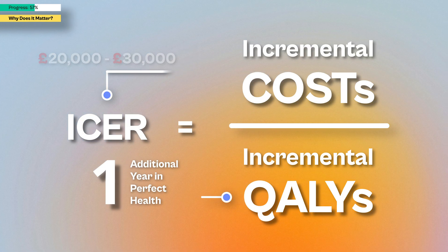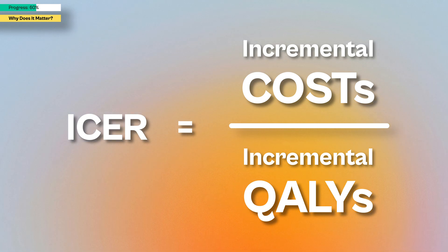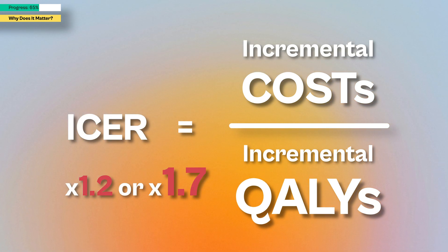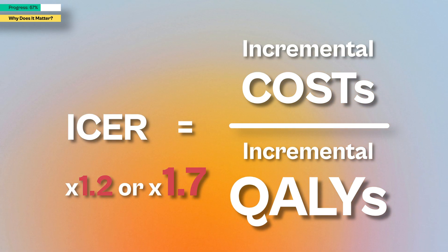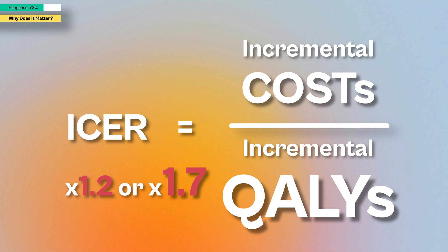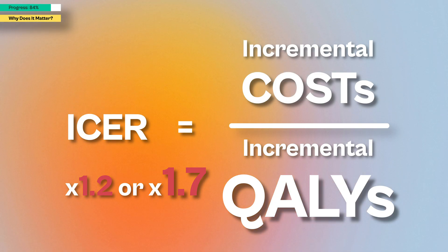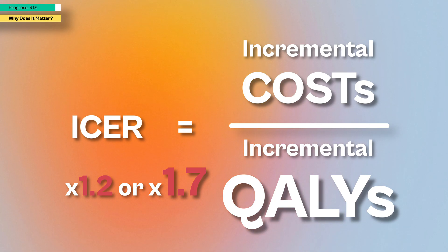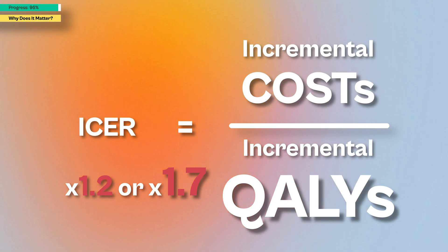Here's where the severity modifier comes in: it increases the value of the QALYs provided by the medicine. In other words, if a treatment targets a severe disease, NICE is prepared to pay more for it. By applying a severity weighting, the ICER is effectively reduced, making the medicine appear more cost-effective.